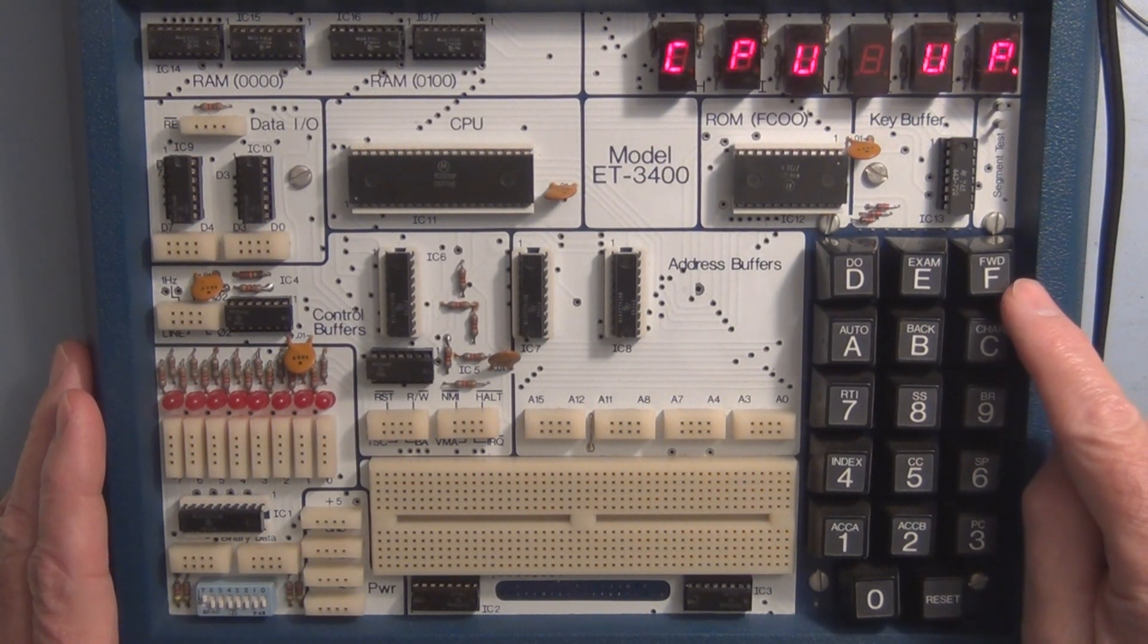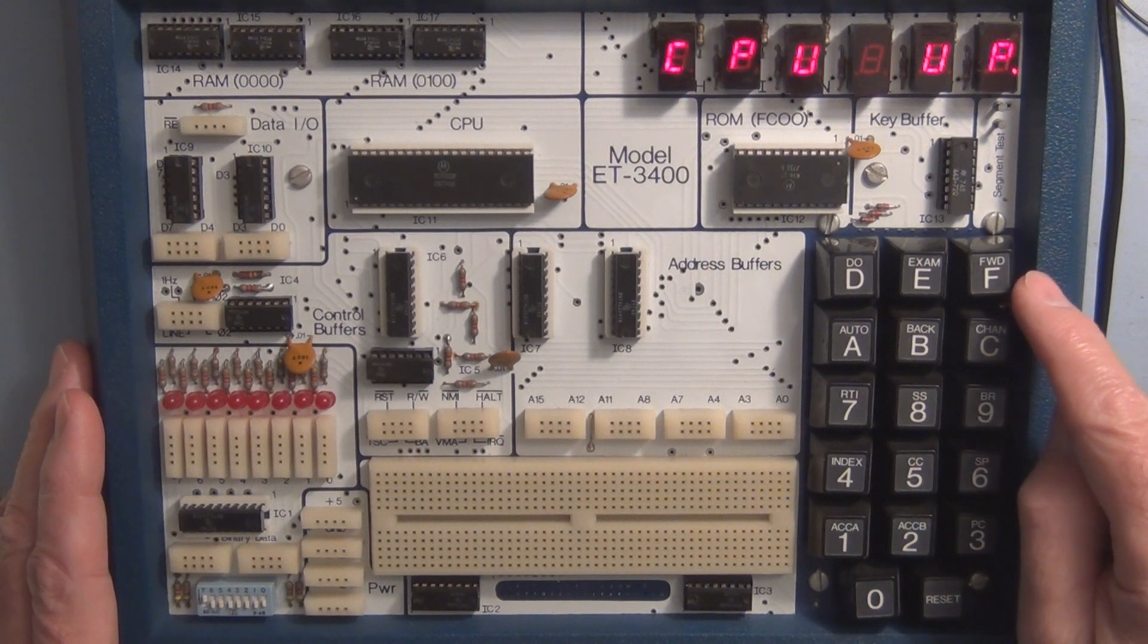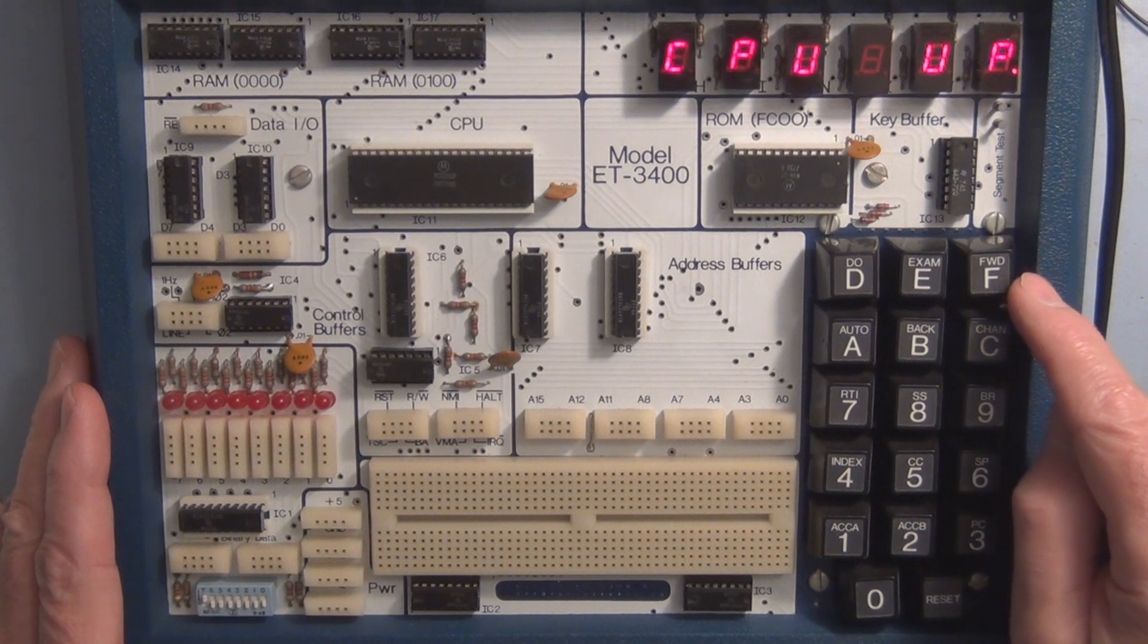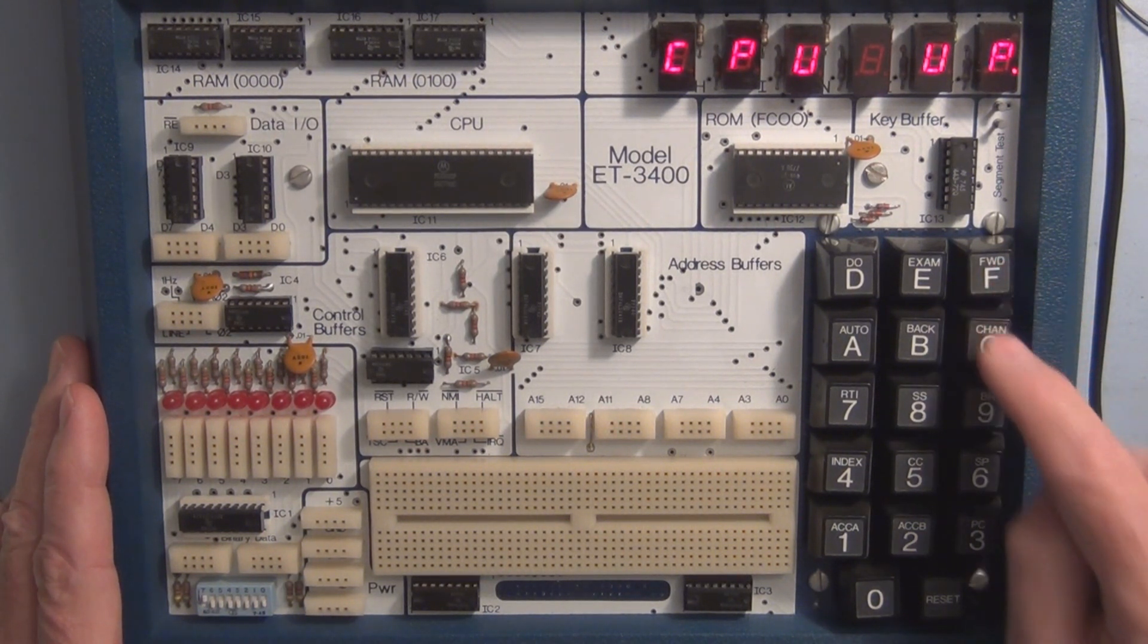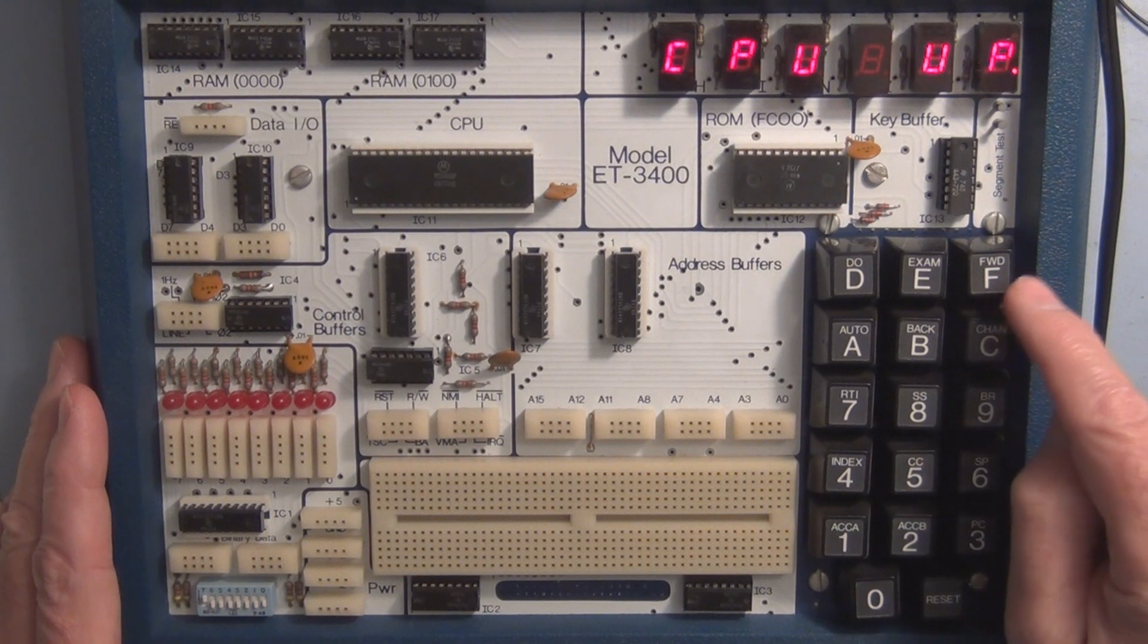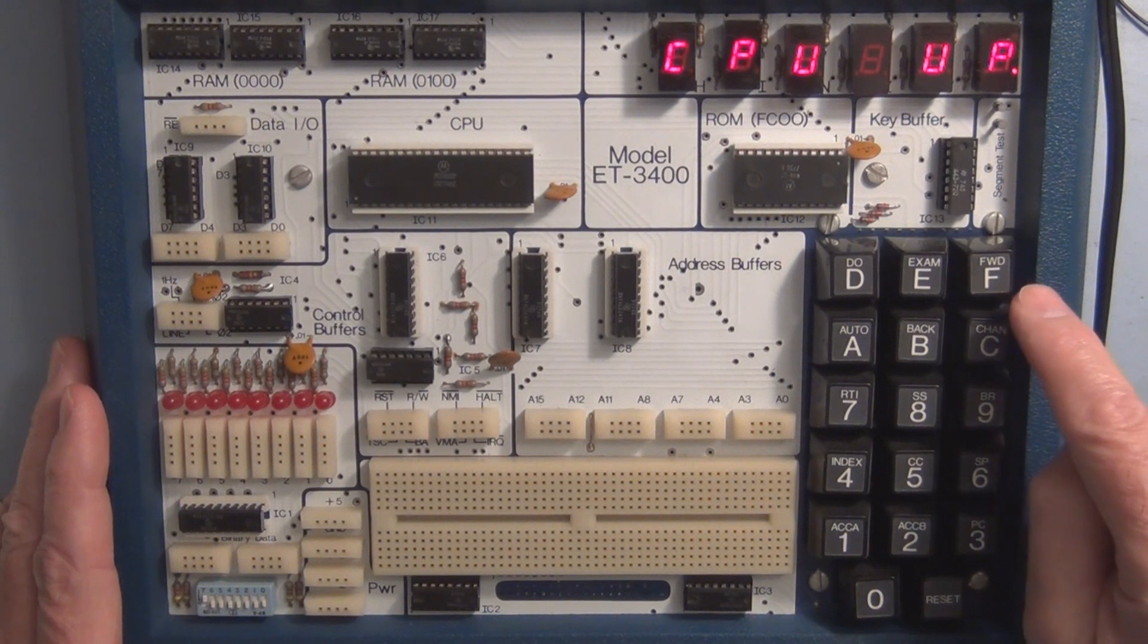And behind these keys are some circuitry, and that's also associated with a program or a subroutine in the ROM that looks at each one of these keys, and when you go to press it, it generates the binary code associated with that key. The letter F, for instance, would be four ones.